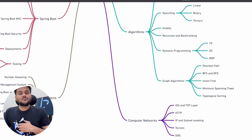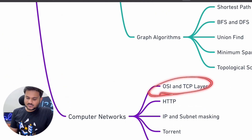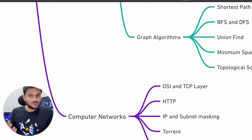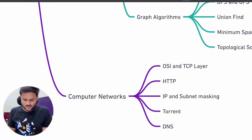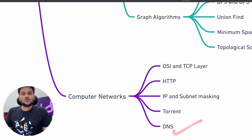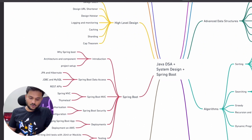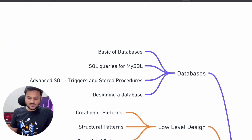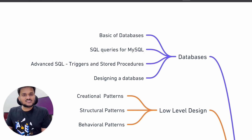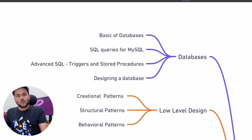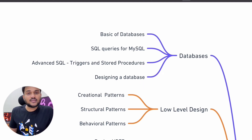After that we are going to cover some computer science fundamentals like computer networks — OSI and TCP layers, HTTP, how IP and subnet masking works, how Torrent works internally, how DNS queries work and how DNS is implemented. We will also see databases: basics of databases, SQL and MySQL queries, advanced SQL queries that can help you write PL/SQL — for example, triggers, stored procedures — and how you can actually start designing a database.